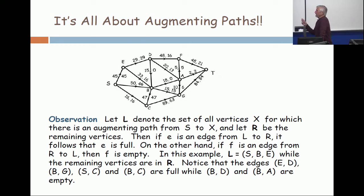Now, look at the edges which go from the ones you can reach to the ones you can't. So, if you have an edge that goes from L to R, it must be full. Because if it wasn't full, and you can get something to the first endpoint, then it's not full, so you can push a little bit across. So, you can get something over here.